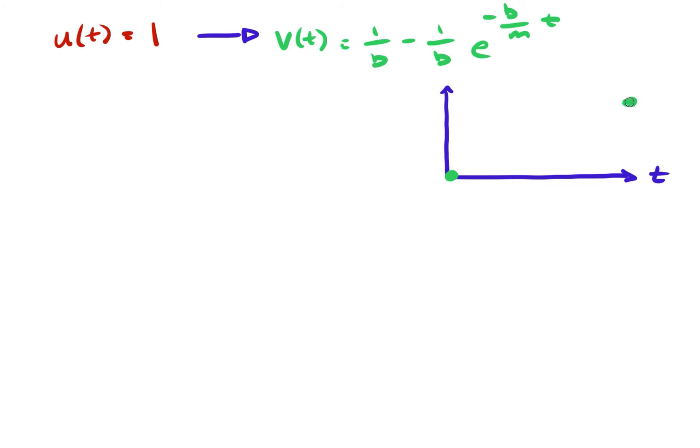Additionally, as t approaches infinity, the velocity approaches the terminal velocity of one over b. In between, an exponential function is gradually subtracted, and the final velocity profile is shown to agree very well with our intuition.